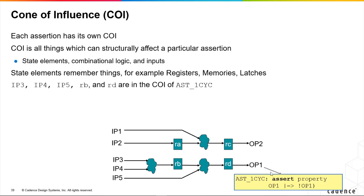If we write an assertion on OP1, in the fanning cone will be the things that can structurally affect the result, which are IP3, IP4, and IP5, the combinational logic, and the state registers RB and RD.